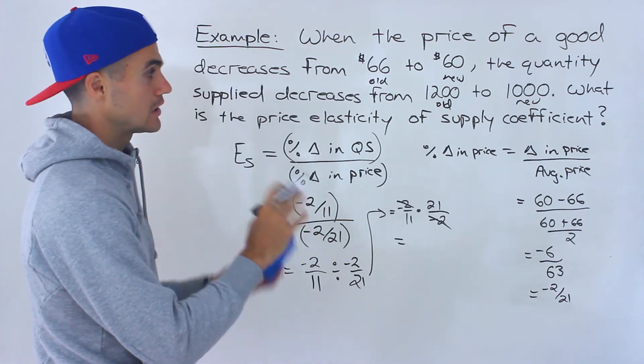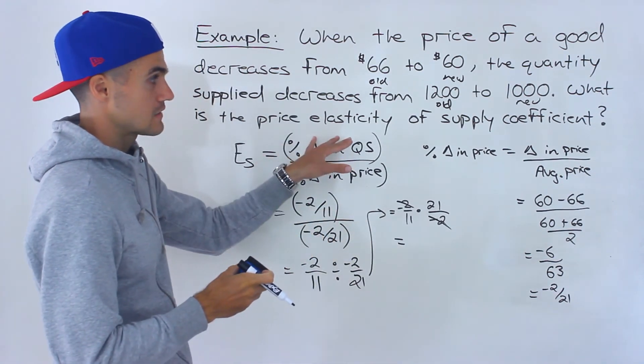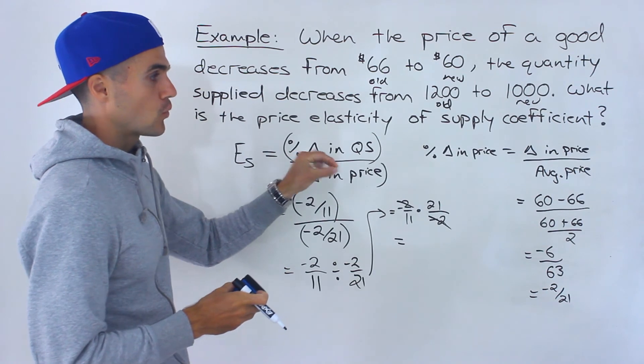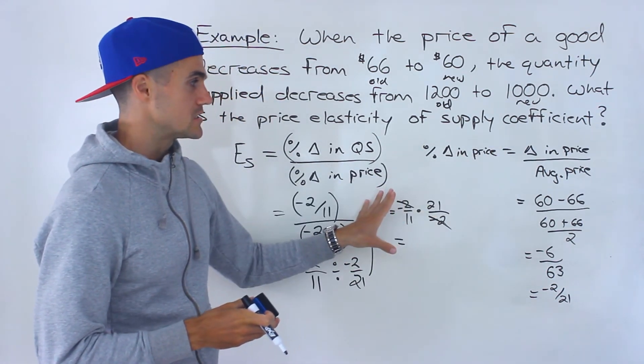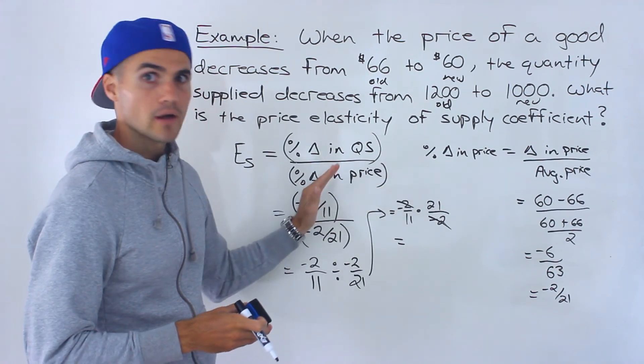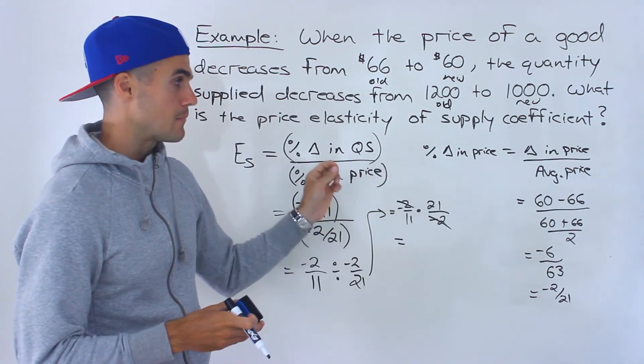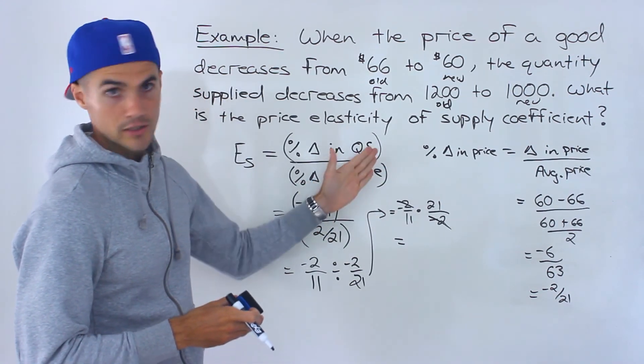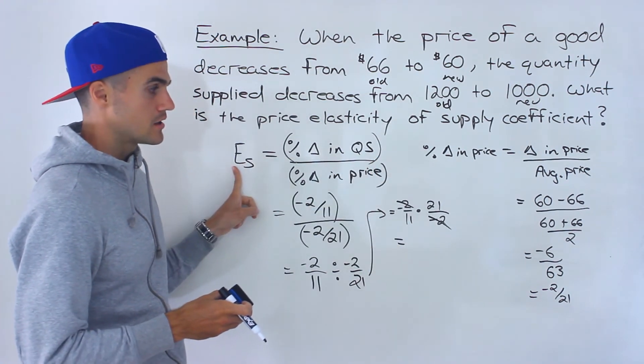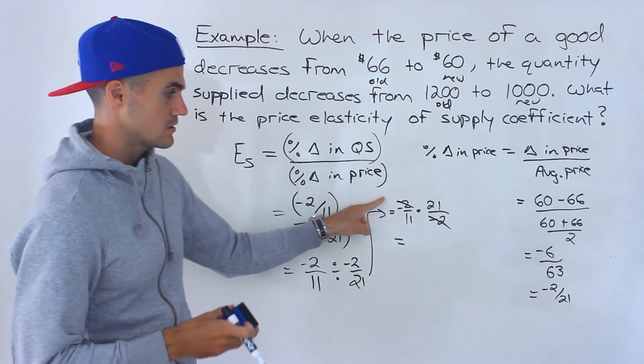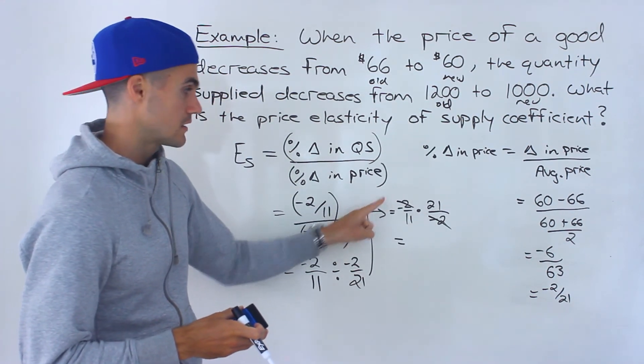So as I mentioned in the overview video with the price elasticity of supply, we don't have to worry about absolute values and keeping everything positive like we did with demand because that quantity supplied and that price are directly correlated. So the negatives will always cancel out. This is always going to be a positive value. So here's an example of those negatives canceling out.